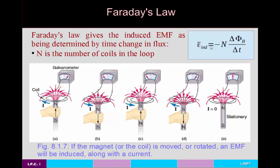If you're looking for the actual current — what the galvanometer or ammeter measures — you just need to know the total resistance of the coil, because the induced current equals the induced EMF divided by the resistance. The average EMF formula applies over a finite time interval; to get a good approximation of the instantaneous EMF, you perform the change over a very short amount of time.